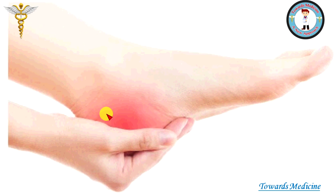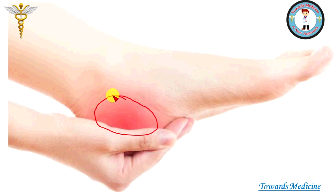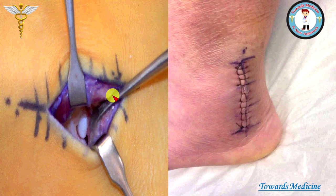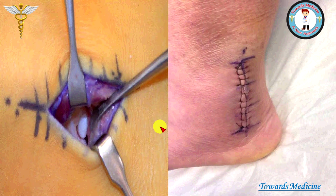Such patients are treated with non-steroidal anti-inflammatory drugs to relieve pain and inflammation. But if the situation does not improve, the option left is surgery. In surgery, the Os Trigonum is removed, a plaster is placed on the joint for four to five days, and then for a short time the patient undergoes physiotherapy, after which they can resume normal activities of life.